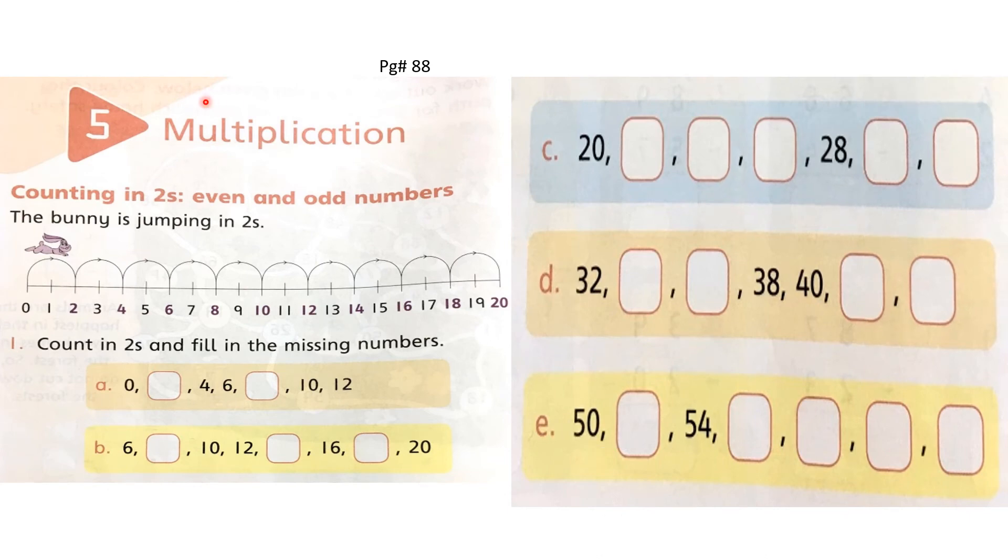Students, now open book page number 88. Write date and day. Topic is counting in 2s. We are going to solve question number 1. Look at here. There is a number line and bunny is helping us. Bunny is jumping over this number line by skipping one number.